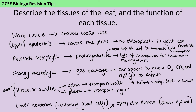The xylem are hollow, woody, dead cells with no divisions between where the old cells used to be. Whereas the phloem are living cells with perforated ends called sieve tubes, and there are also companion cells sitting alongside the phloem cells, providing them with energy.